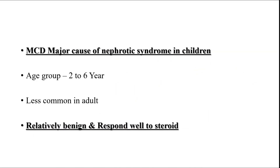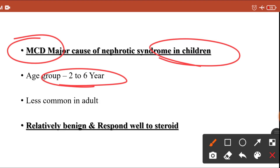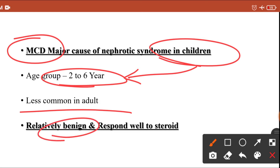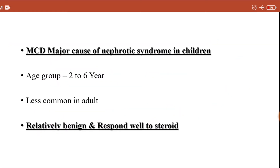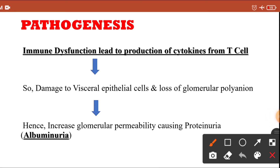Always remember that minimal change disease is the major cause of nephrotic syndrome in children. If asked in an exam which is the most common cause of nephrotic syndrome in children, your answer should be minimal change disease. It is common between the age group of two to six years. It is less common in adults, it is a relatively benign disorder, and the patient will respond excellently to steroids — there will be dramatic improvement with steroid therapy.